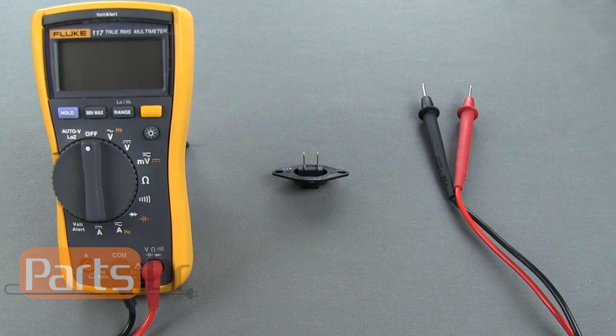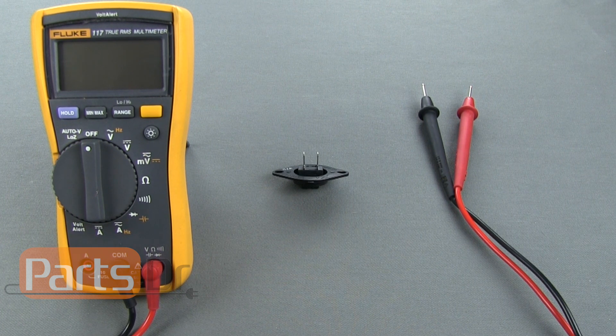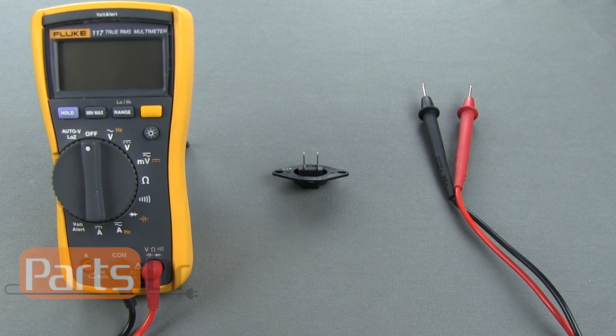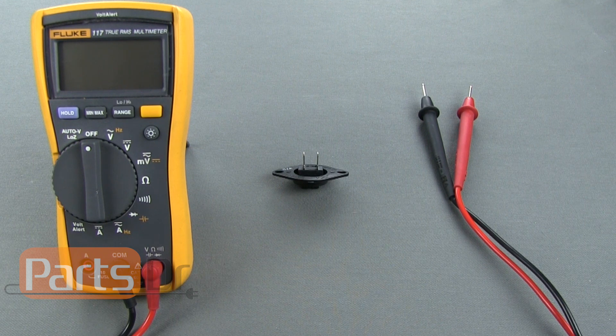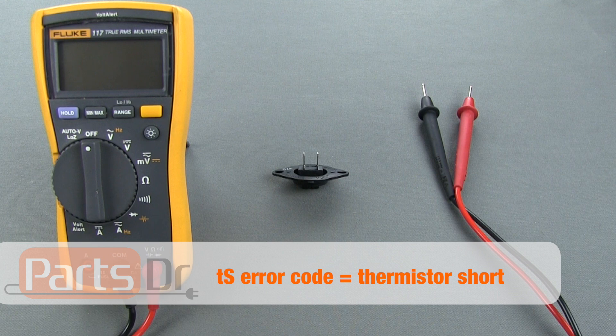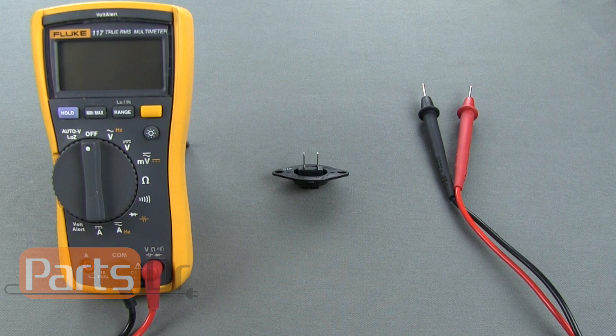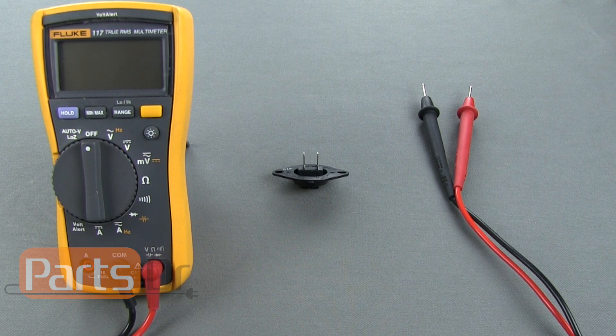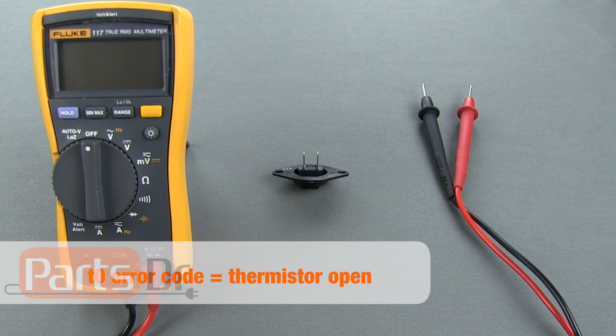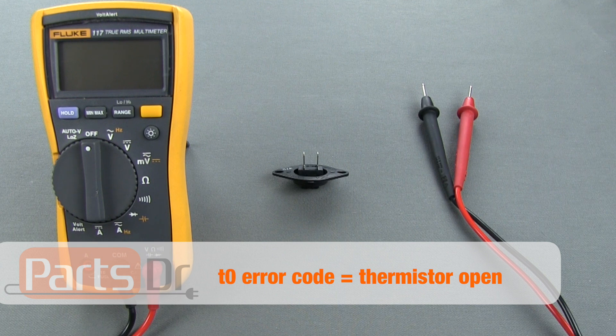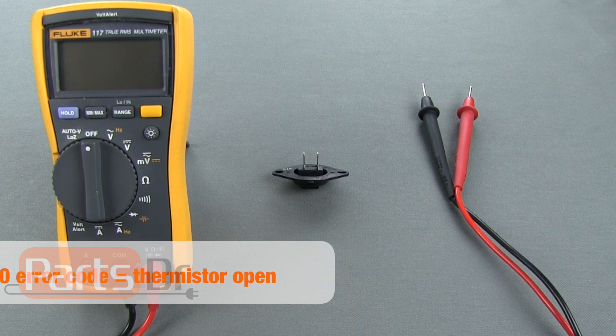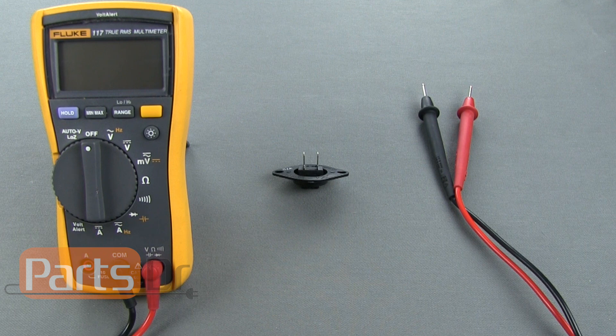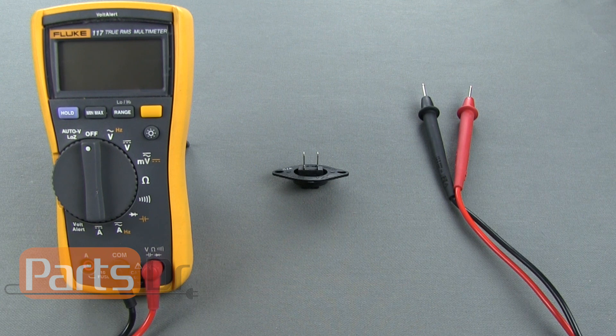When the thermistor fails it can cause the dryer to display a TS or TO error code. The TS error code stands for thermistor short. The dryer displays this error code if it senses that the thermistor resistance is very low. The TO error code stands for thermistor open. The dryer displays this error code if it senses that the thermistor resistance is very high.